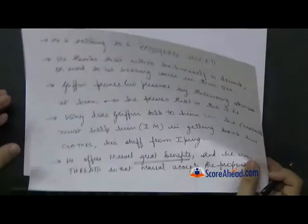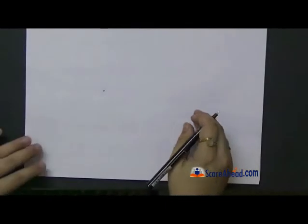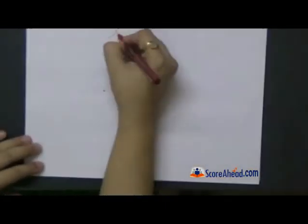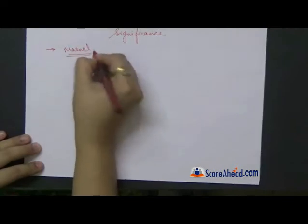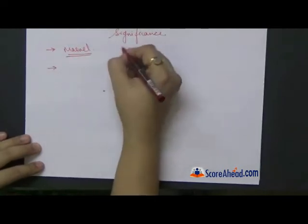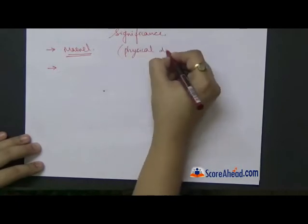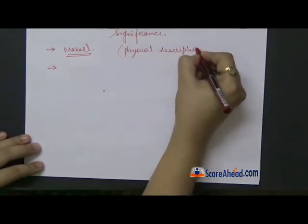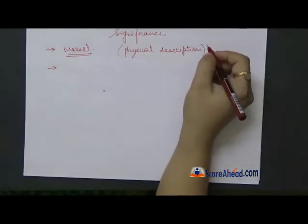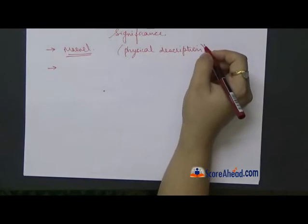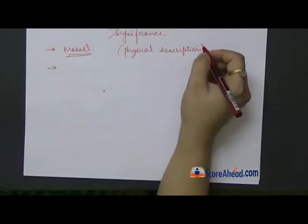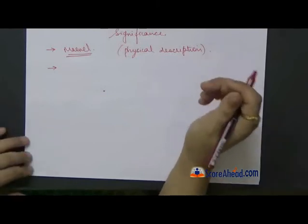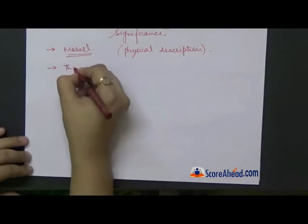We still have to discuss the significance of this chapter. The most important thing about this chapter is Marvel — this man is introduced to the reader and his physical description is given. As discussed earlier when doing the physical description of the stranger in Chapter 1, whenever you attempt an answer on the character of Marvel, you first begin with how this man looks and behaves. This chapter gives us that physical description.